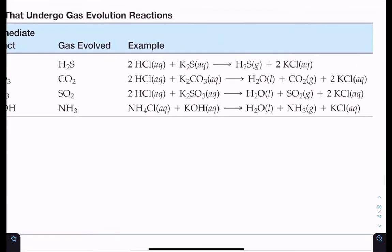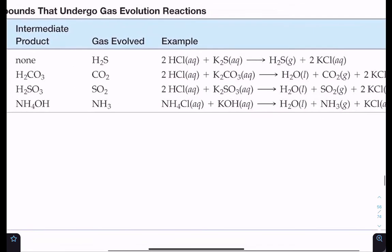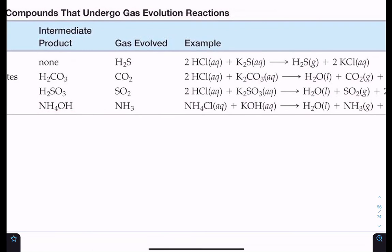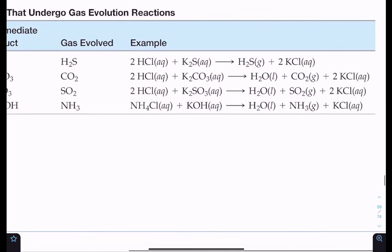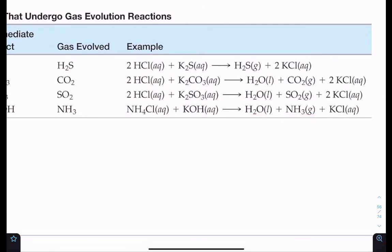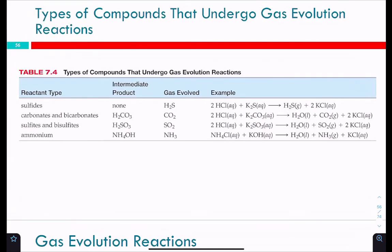The last gas evolution reaction involves ammonium. Ammonium chloride can react with a base like potassium hydroxide, and it forms water and ammonia gas. So memorize these intermediate products: H₂CO₃, H₂SO₃, and NH₄OH (ammonium hydroxide). If you get any of those three, that's a gas evolution reaction. H₂S has no intermediate product.